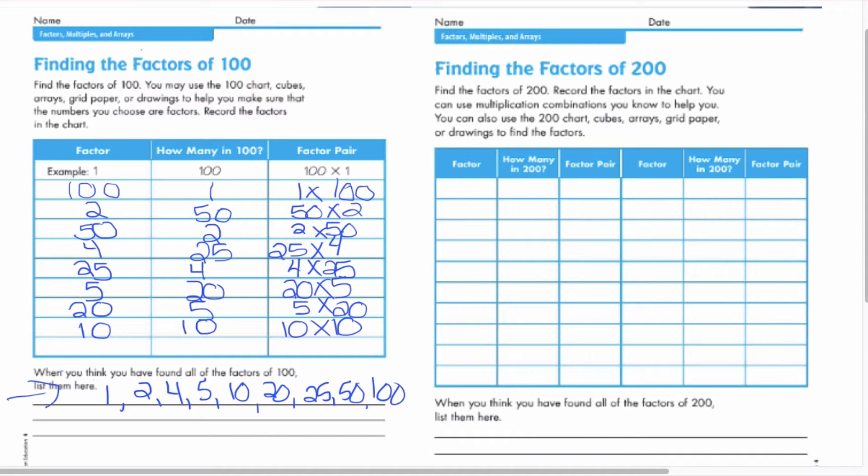We've been working on finding the factors of a hundred. We were able to do that together and we listed the factors of 100 right down here. We came up with 1, 2, 4, 5, 10, 20, 25, 50, and 100.